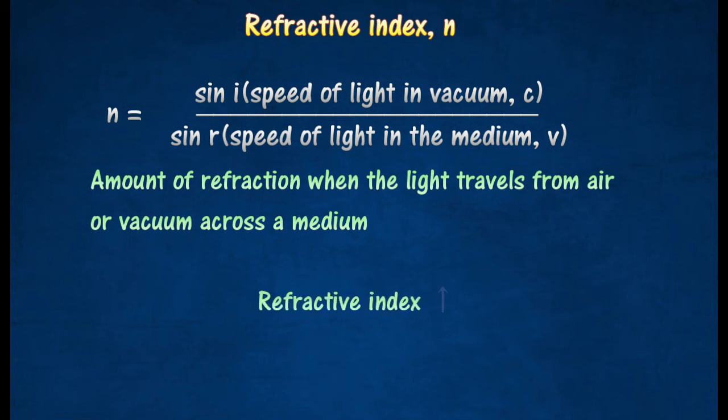When refractive index increases, the speed of light decreases. This means the speed of light is reduced when it enters a denser medium.